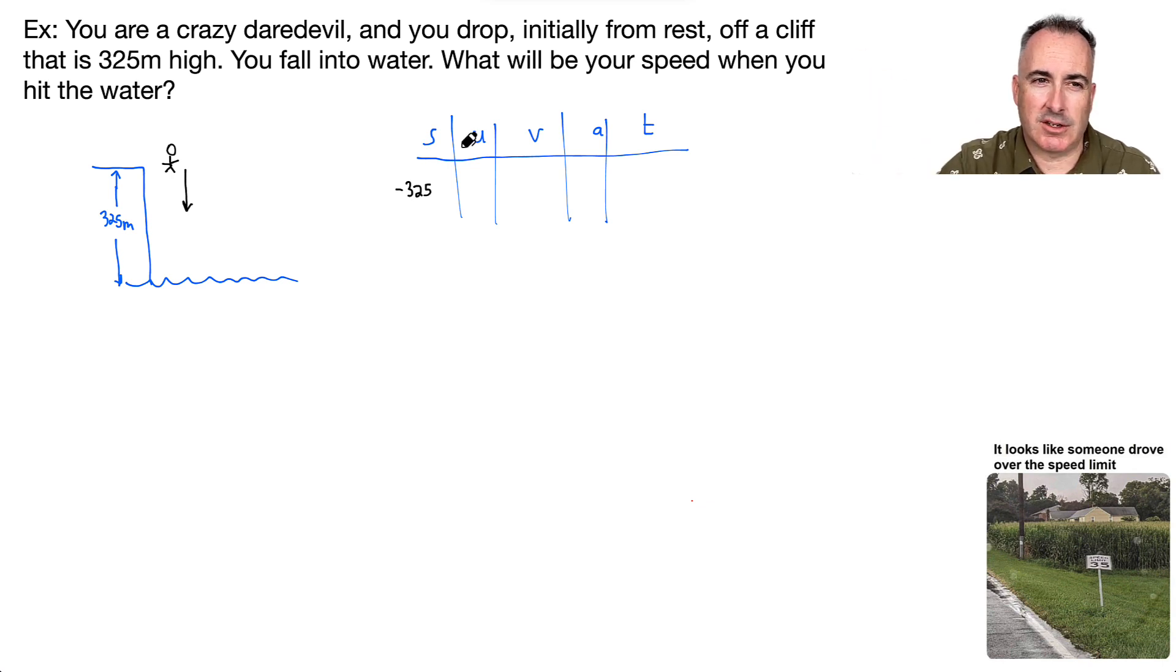U, what's your initial speed? Initial speed is initially from rest, so that means you must be going zero initially. V is your final speed. Hey, that's what they ask for. So I want that. I'll put a star by that. What about my acceleration? I'm accelerating downwards at negative 9.81 meters per second squared. And T, do I know the time? I actually don't know and I actually don't care. So now I need to go hunting for an equation that has S, U, V, and A that does not have a T.